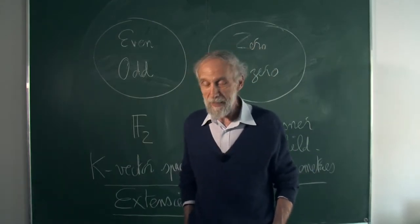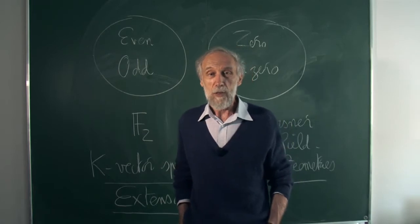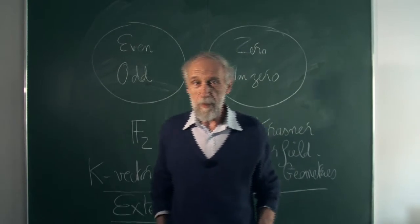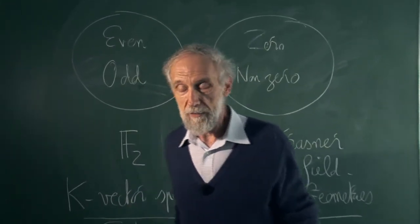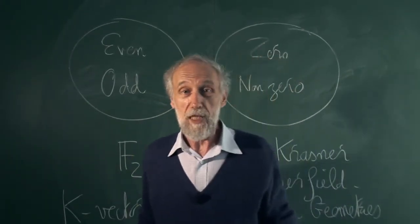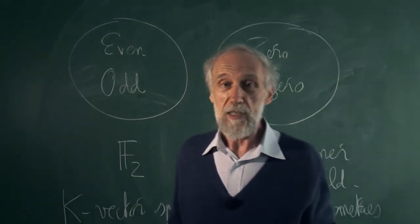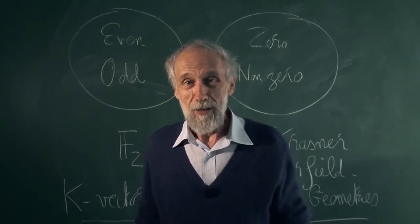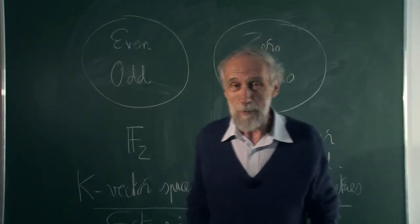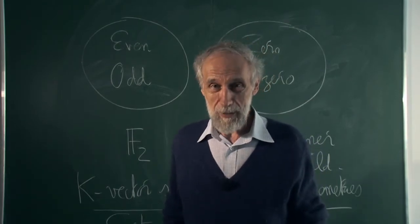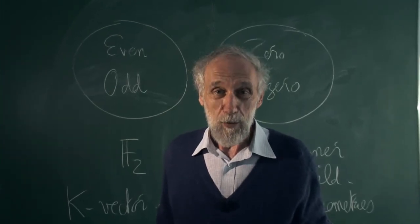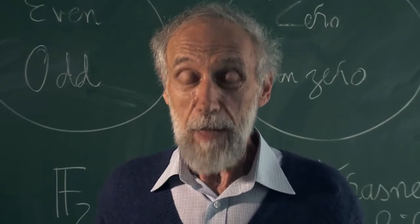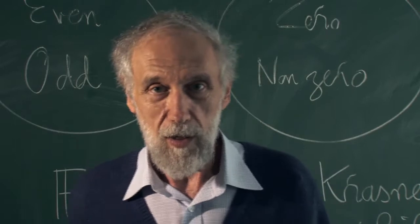The discovery of Krasner — hyperfields — can be explained very simply. When we do arithmetic, we use addition, subtraction, multiplication, and division. The simplest arithmetic realm is the field with two elements, explained by whether numbers are even or odd. Now consider the property of numbers being zero or non-zero: you easily write the multiplication table, but when you add two non-zero numbers the result can be zero or non-zero. So you get what is called a hyperoperation. Krasner in his 1956 paper extracted the correct axioms for these algebraic objects.